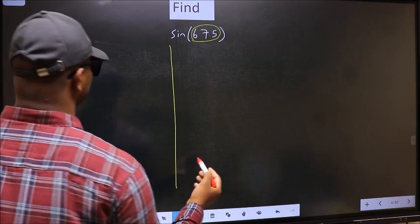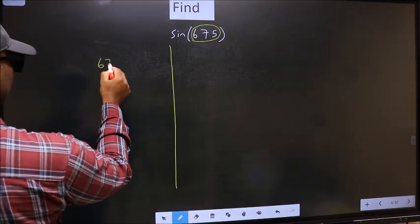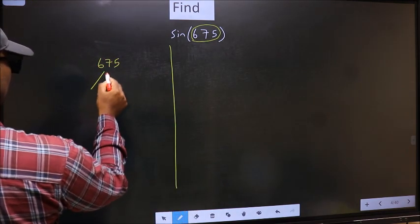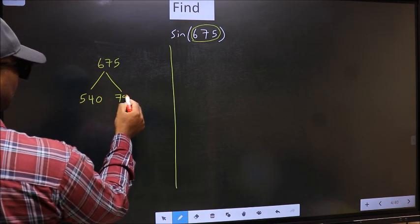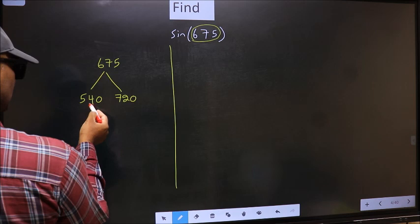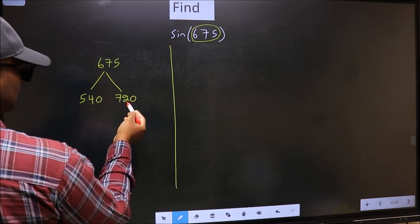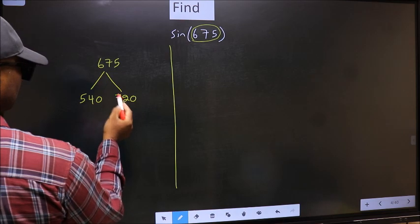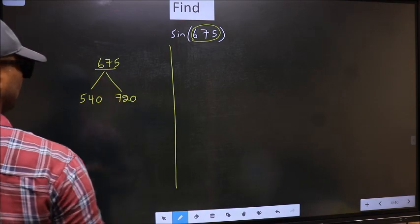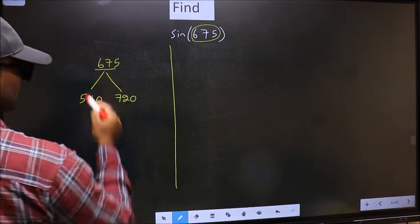What I mean is 675 lies between 540 and 720. This is 180 × 3 and this is 180 × 4. Between these two numbers, 675 lies.